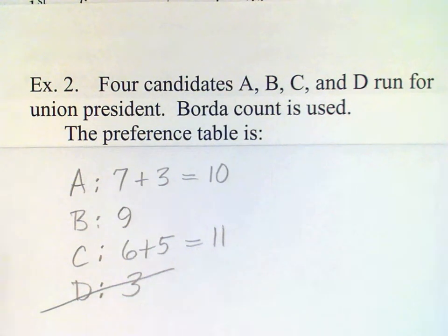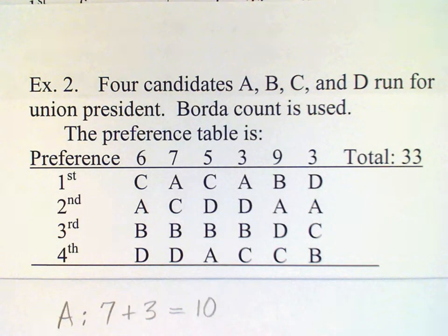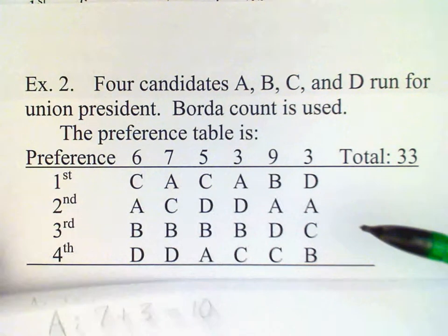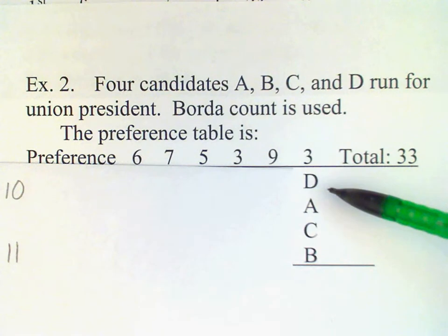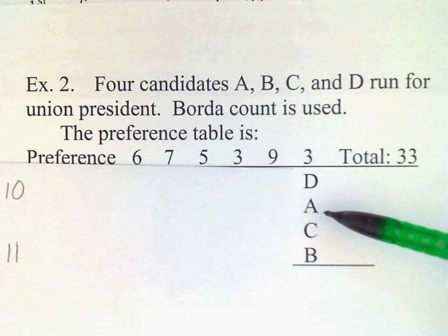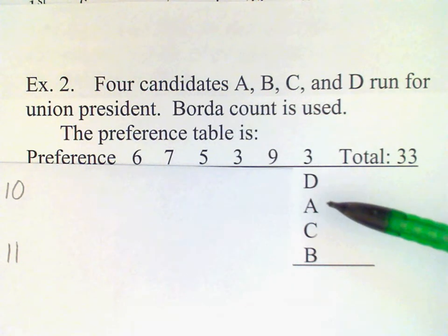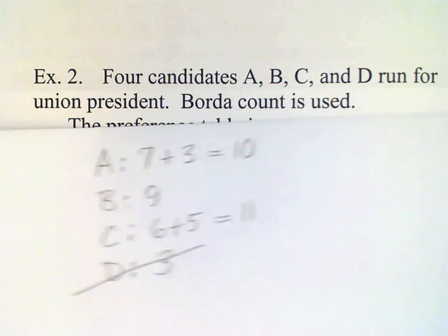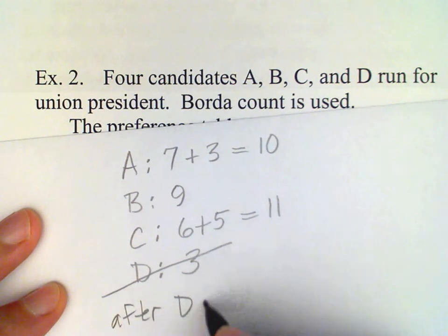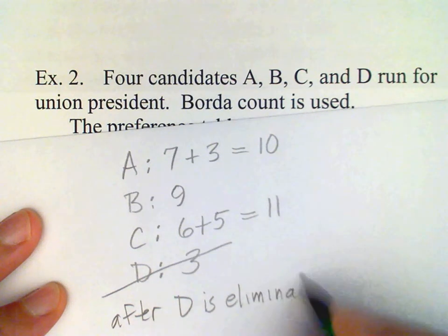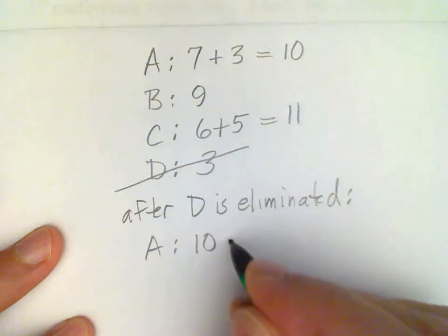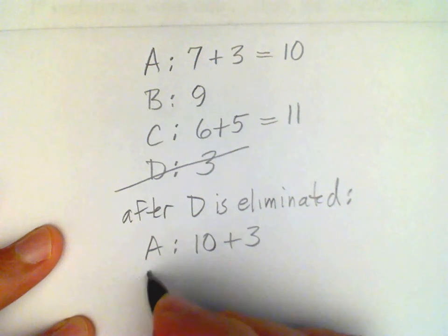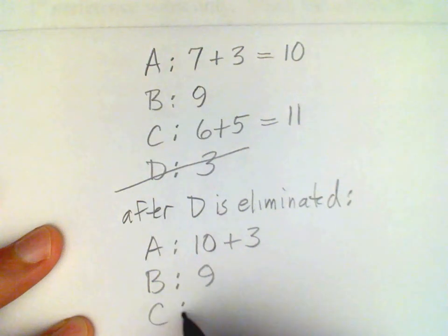Looking at these first preference vote totals, D should be eliminated — D has the fewest votes. We go back to the column where D was at the top. Those voters' next preference is A, so A moves to the top of that column and gets those votes. After D is eliminated, A has the original 10 votes plus the 3 from D, giving 13. B still has 9 and C still has 11.